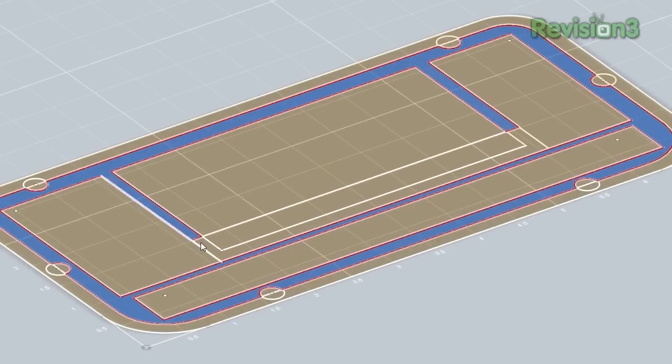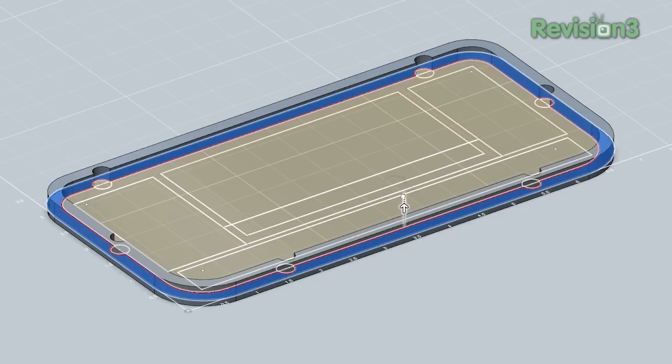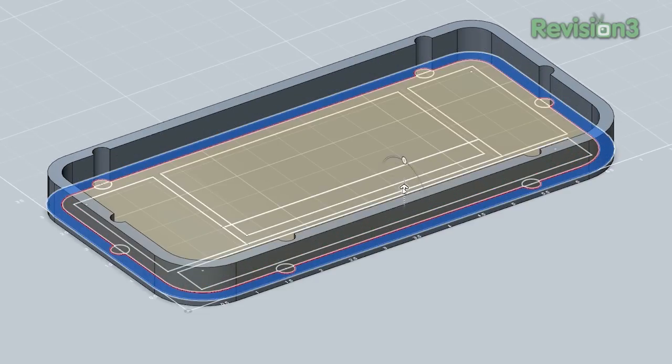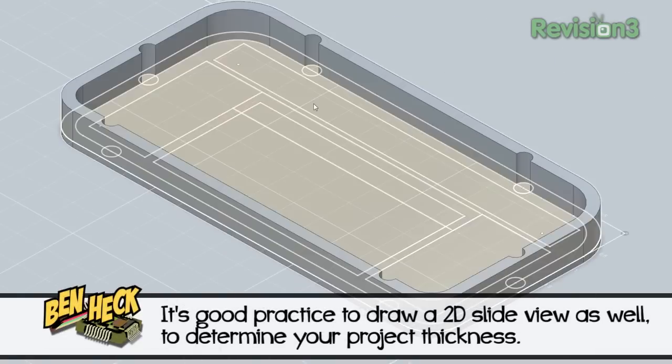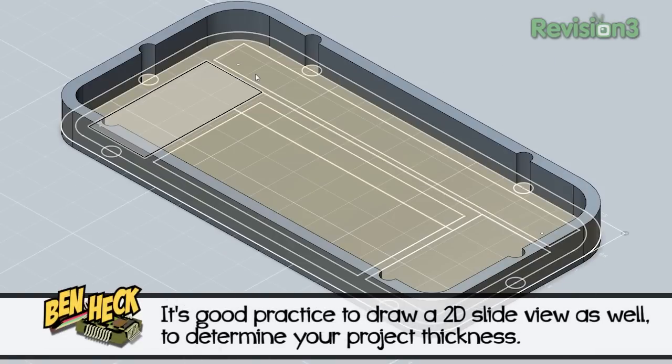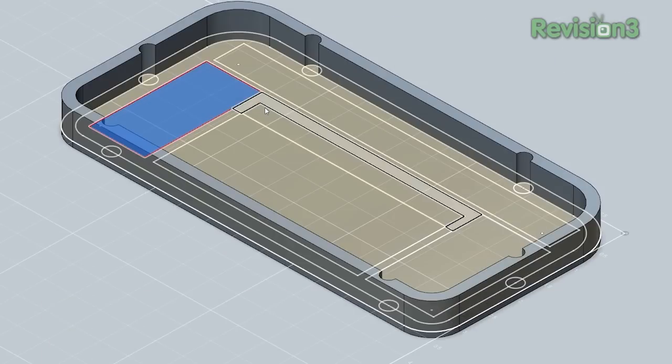Once you have it all and it looks right, start extruding the faces out to the height you need to fit your components. Remember, a component is only as small as its largest part. Sometimes you can relocate larger parts, like capacitors, to an area of your project or PCB where you have more room.